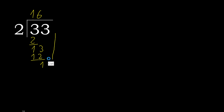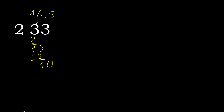Here there is no number, therefore complete — always complete with 0, here with a point. Complete with point: 10. 2 multiplied by 5 is 10. 10 minus 10 is 0.